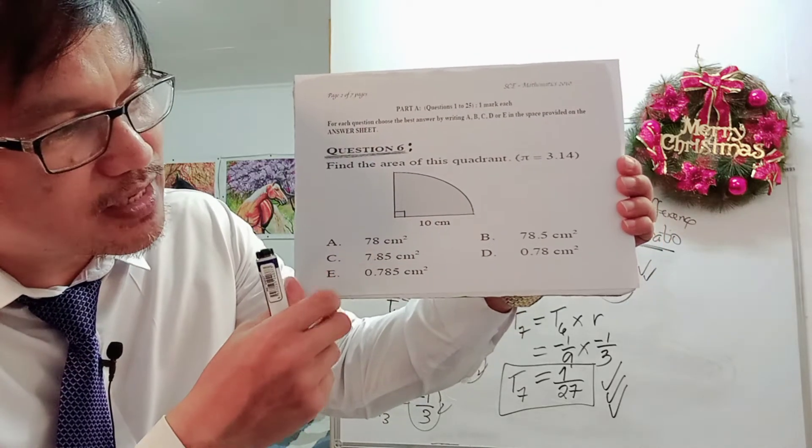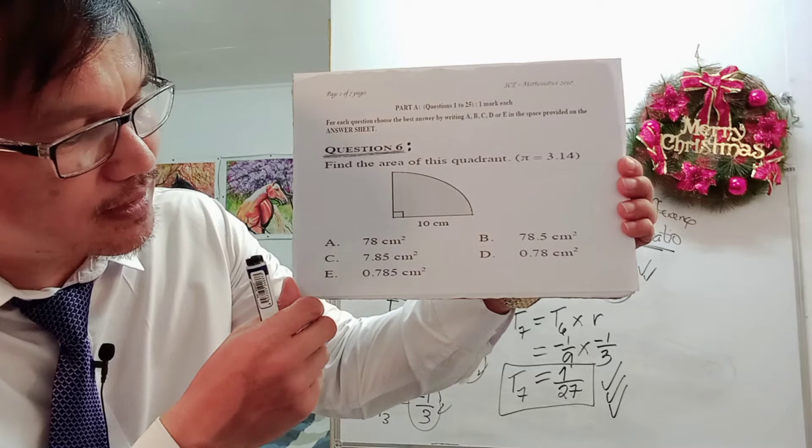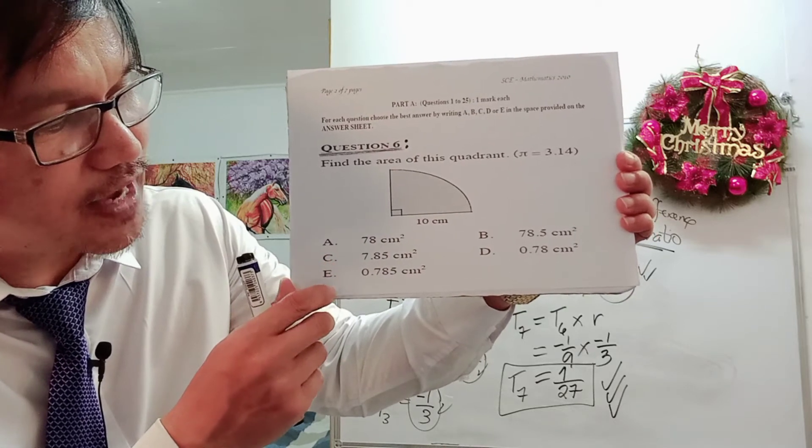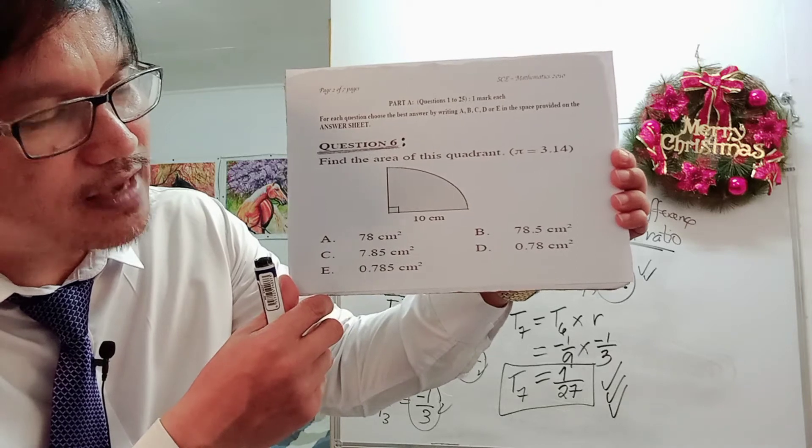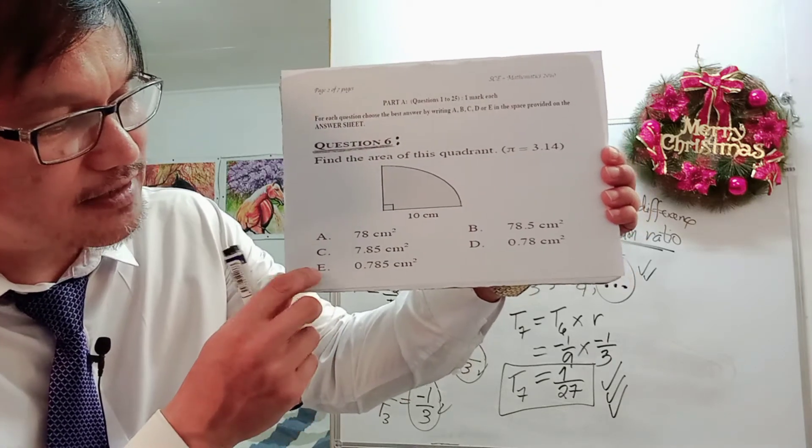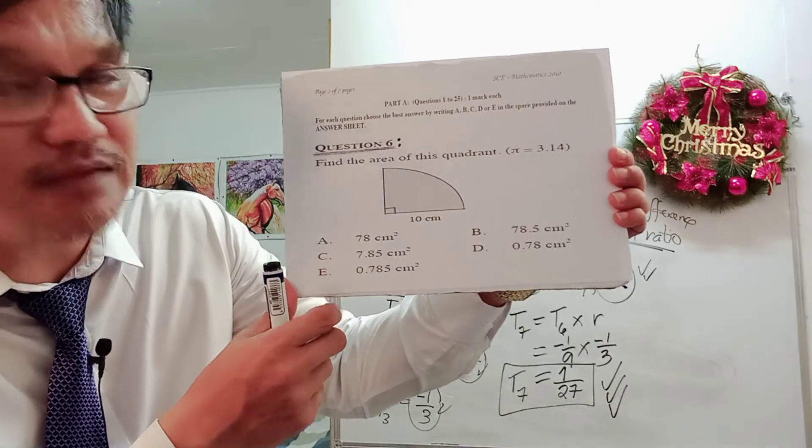Letter C, 7.85 cm². Letter D, 0.78 cm². Letter E, 0.785 cm².